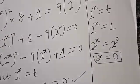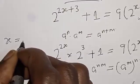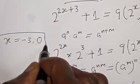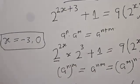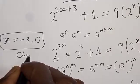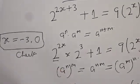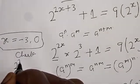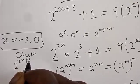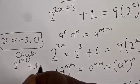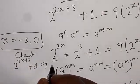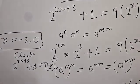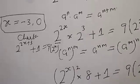Therefore, the values of s are: s equals minus 3 and s equals 0. So those are the values of s. We can check to confirm if our answer is right. The original equation is: 2 raised to power 2s plus 3, plus 1, is equal to 9 into 2 raised to power s.